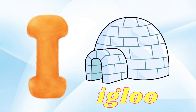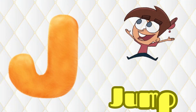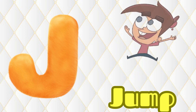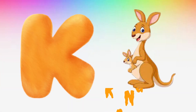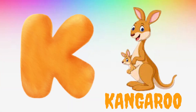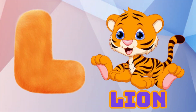I is for Igloo, I-I-Igloo. J is for Jump, J-J-Jump. K is for Kangaroo, K-K-Kangaroo. L is for Lion, L-L-Lion.